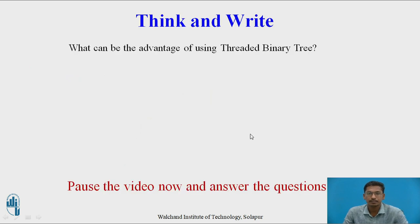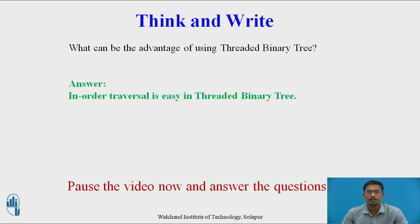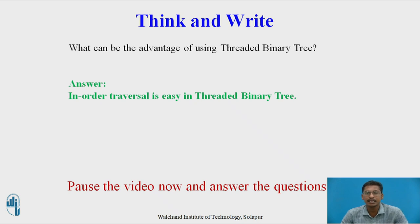Guess the answer — what can be the advantage of using a threaded binary tree? You can pause the video and answer now. One answer is that you can utilize extra memory instead of null pointers. Another answer is that in-order traversal is easy in a threaded binary tree and can be performed without recursion. So these are the advantages of using a threaded binary tree.